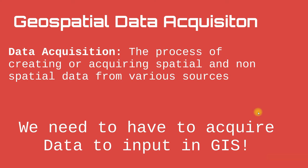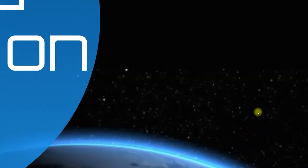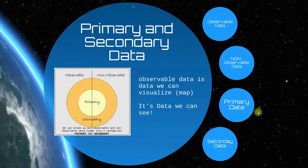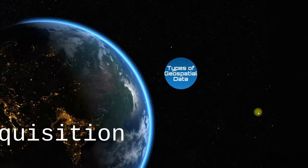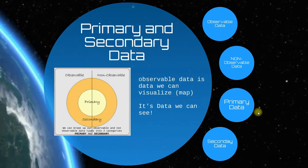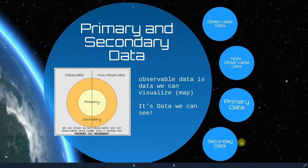Let's talk about the types of primary and secondary spatial data. There are observative and non-observative data types. Observative data is data we can visualize — data we can see.